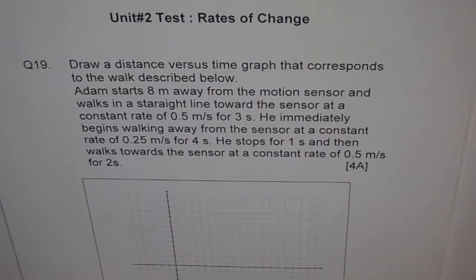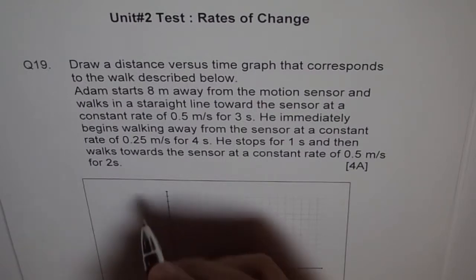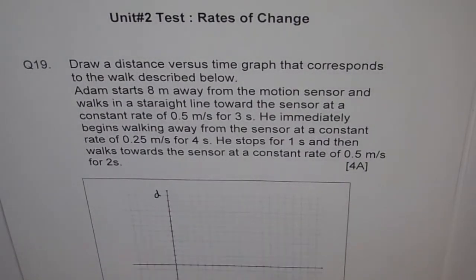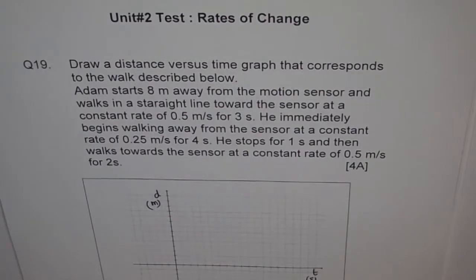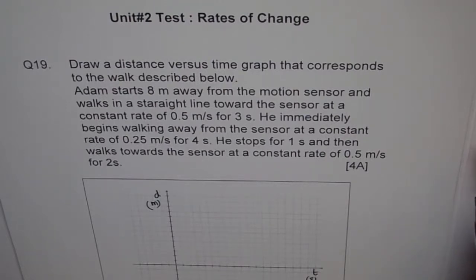So basically, what we have here is: let's assume we have distance on this side and time on this side. Since the units are in seconds and meters, we will put them here. When we say that the person is walking towards the sensor, that means the distance is decreasing. And when we say that the person is walking away from the sensor, then the distance is increasing. So that is kind of important.